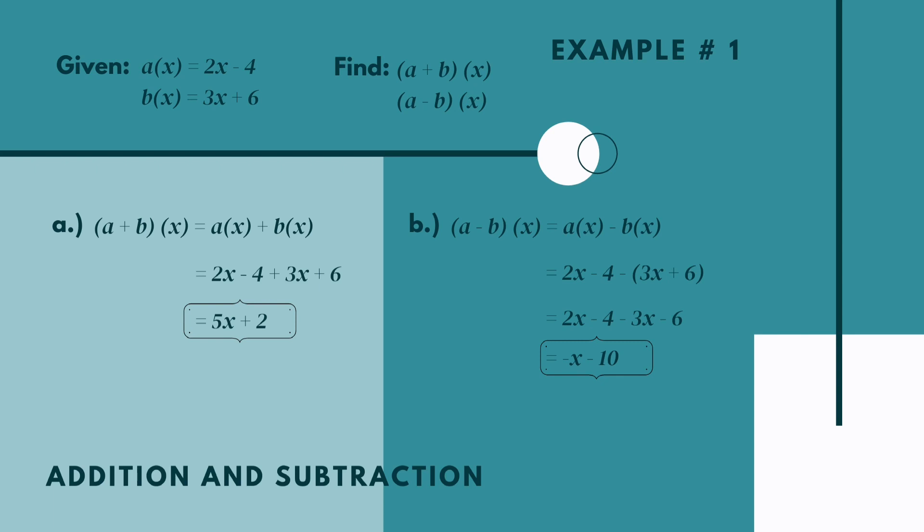Now example number one in subtraction. (a - b)(x) is equal to a(x) minus b(x). Then substitute: a(x) is 2x minus 4, minus b(x) which is 3x plus 6. We put parentheses on 3x plus 6 because without them the sign would be different. So we have 2x minus 4, negative times positive 3x is negative 3x, and negative times positive 6 is negative 6. Combining like terms: 2x minus 3x is negative x, and negative 4 minus 6 is negative 10. Our final answer is negative x minus 10. This is now the value of (a - b)(x).